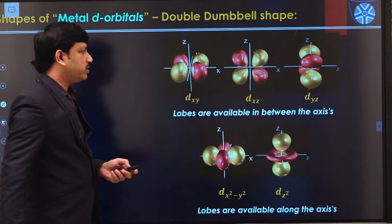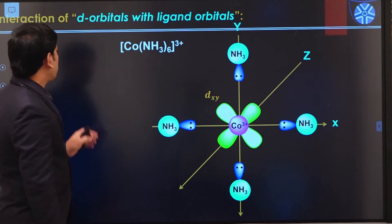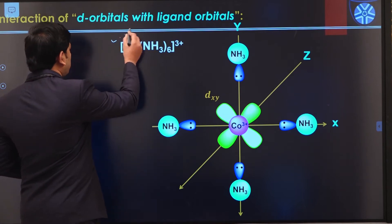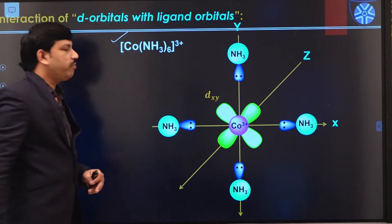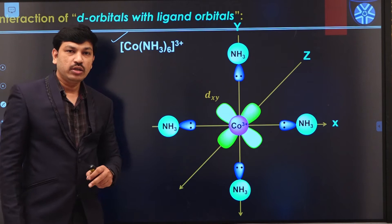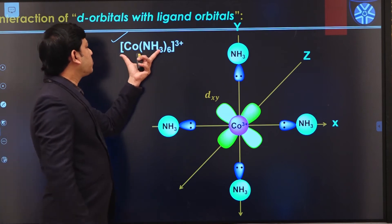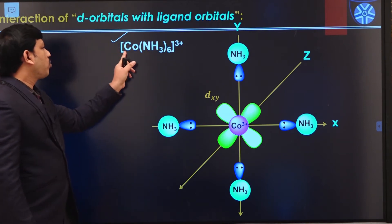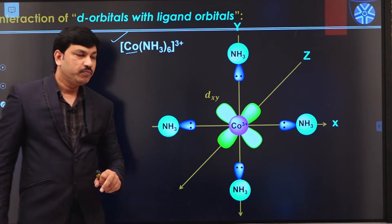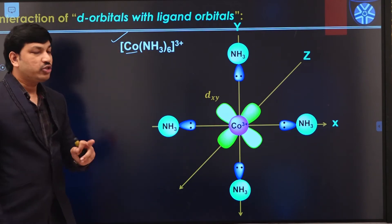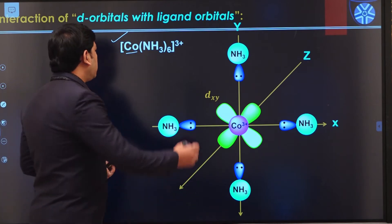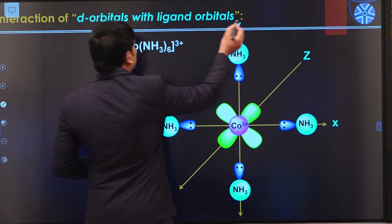For understanding this concept, we take the example of the hexaamminecobalt(III) complex. In this case, cobalt(III) is acting as the central metal cation. Cobalt(III) has five d orbitals and this is actually a d⁶ configuration, meaning six electrons are available in the five different d orbitals.